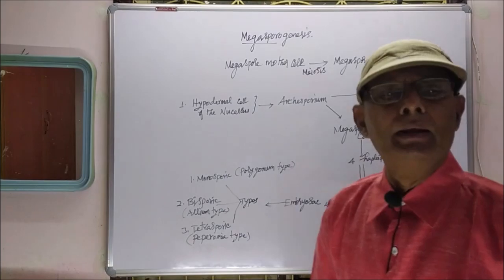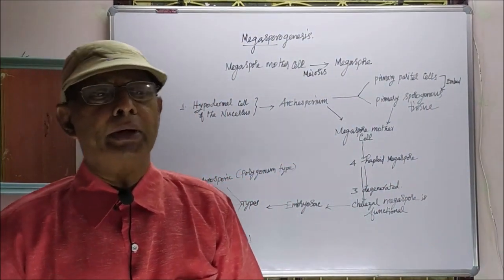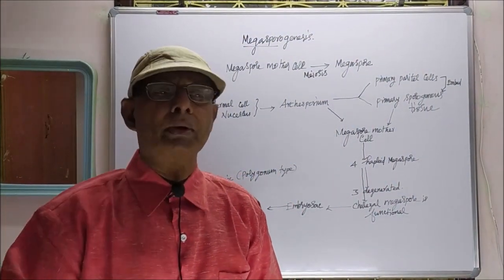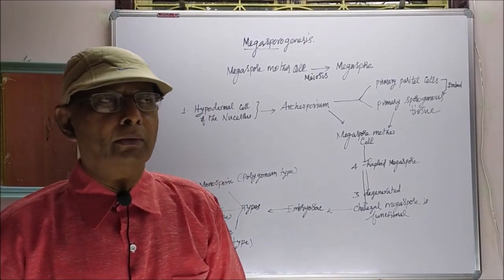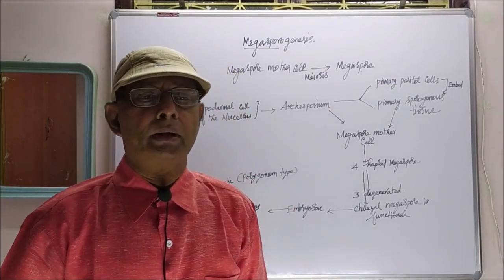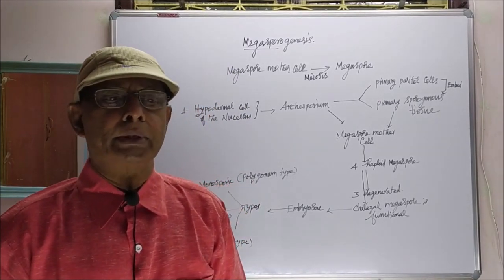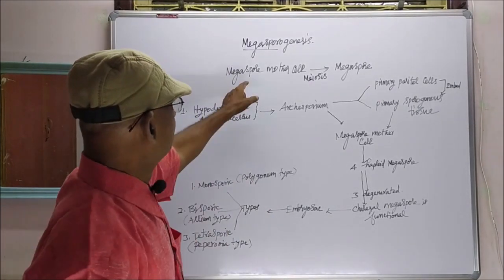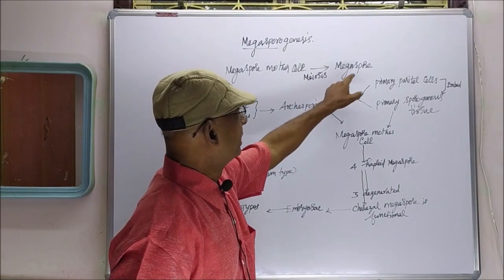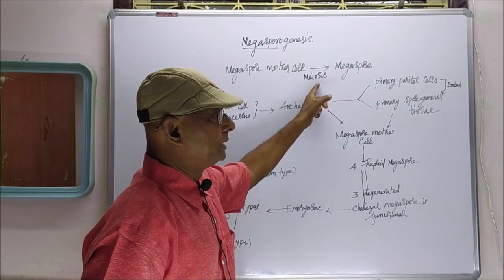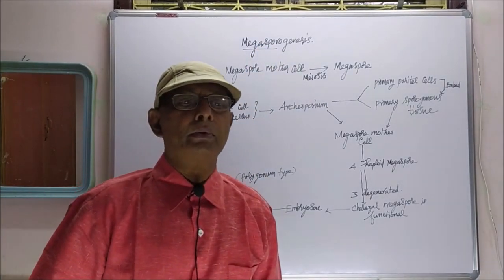Now we have to see Megasporogenesis. It is a process of development of megaspore from a megaspore mother cell. When the megaspore mother cell gives rise to megaspore by meiosis, that process is called Megasporogenesis.